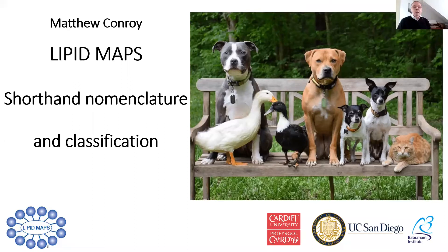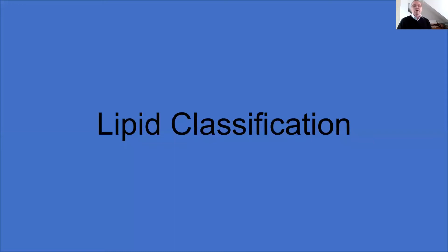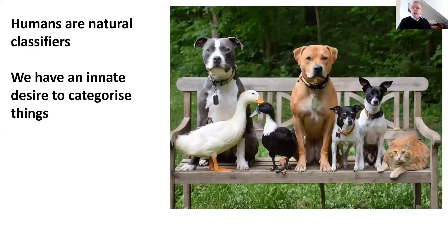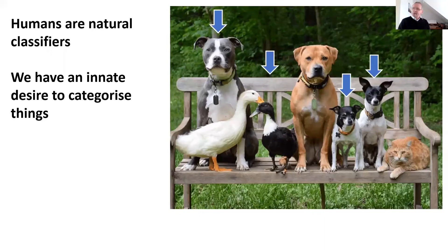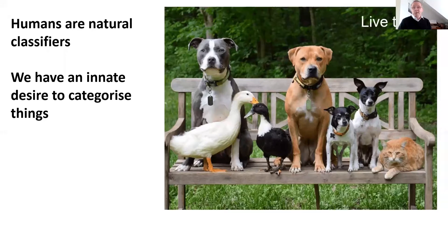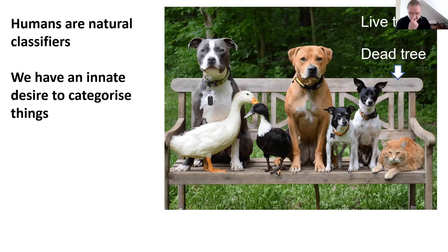Humans naturally want to classify things. If you're looking at that first slide and thinking why does he have a picture of four dogs, two ducks and a cat on there — you have classified automatically. Equally, if you were thinking why does he have four black and white animals, two ginger animals and a white animal, you've also classified things. No one way is correct or incorrect; some are more sensible than others and that may depend on your particular needs.